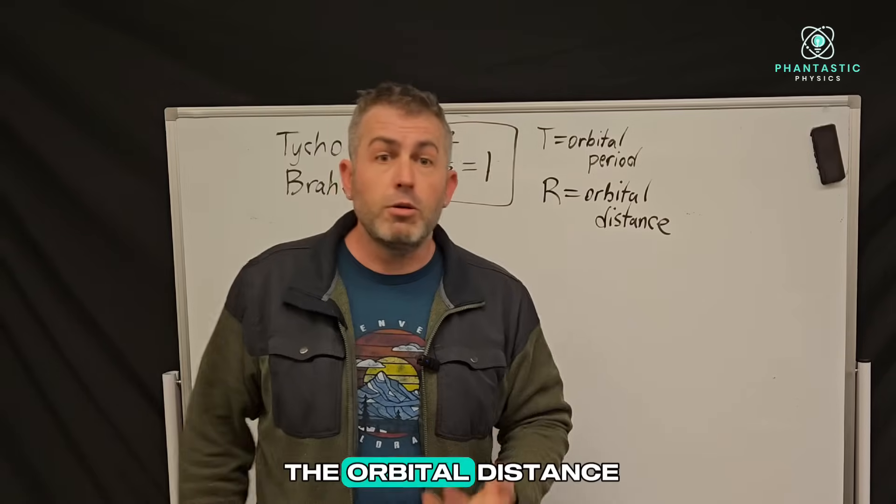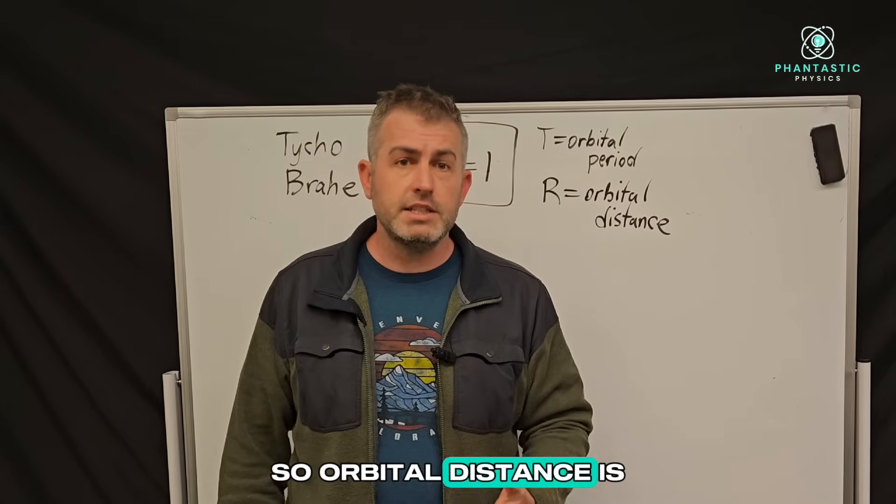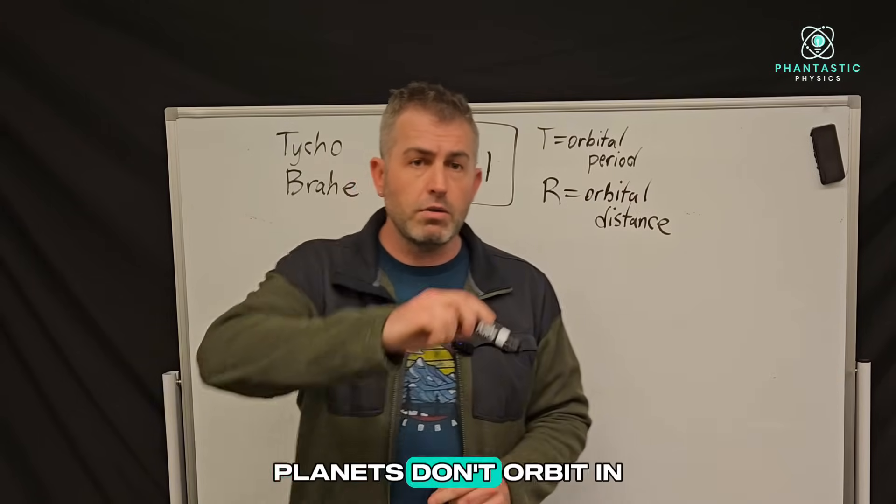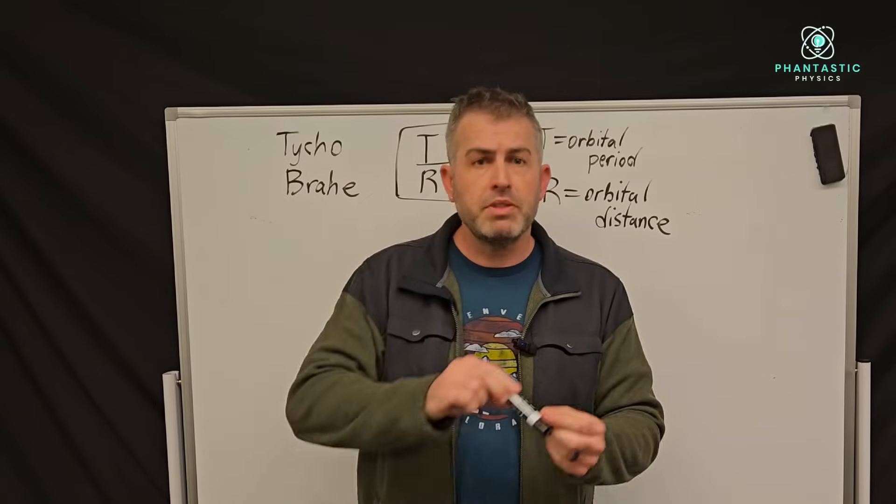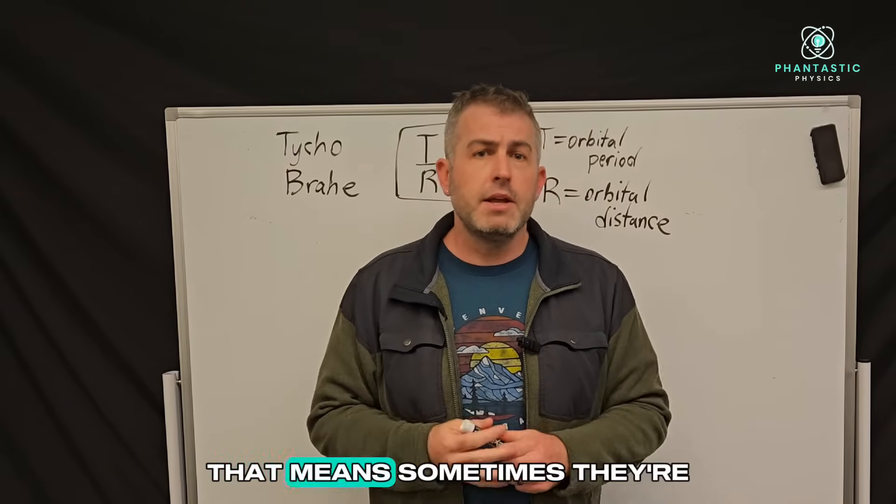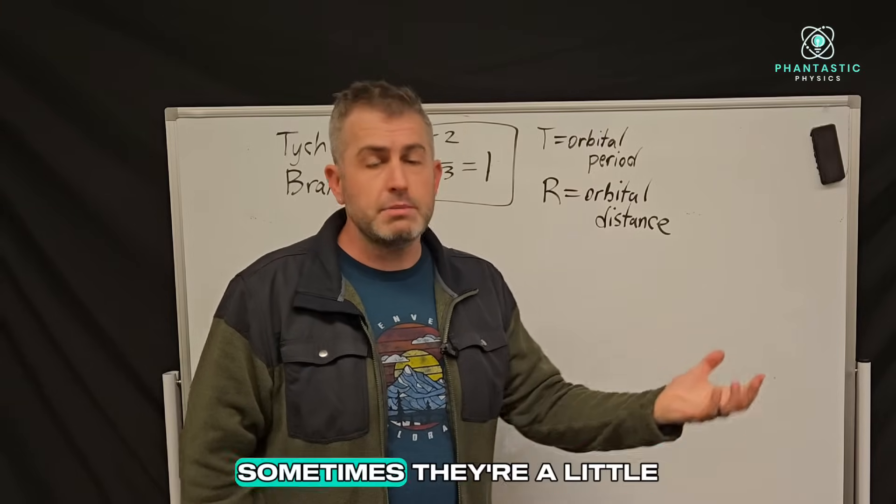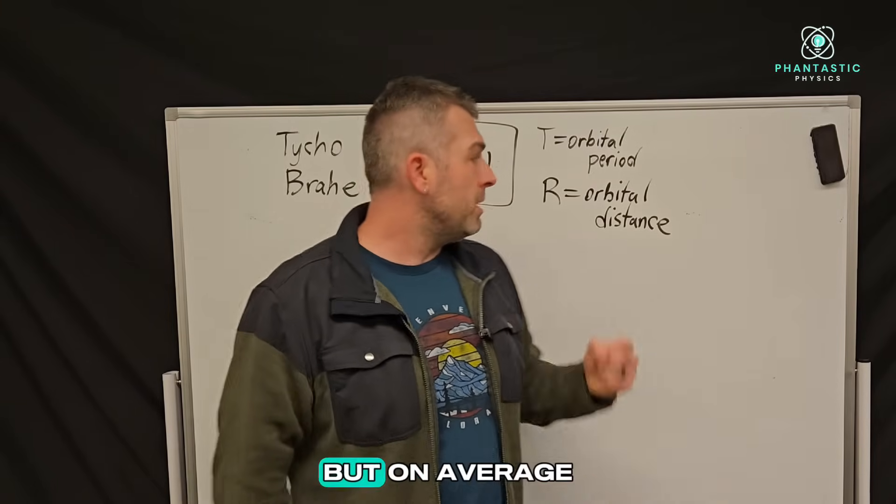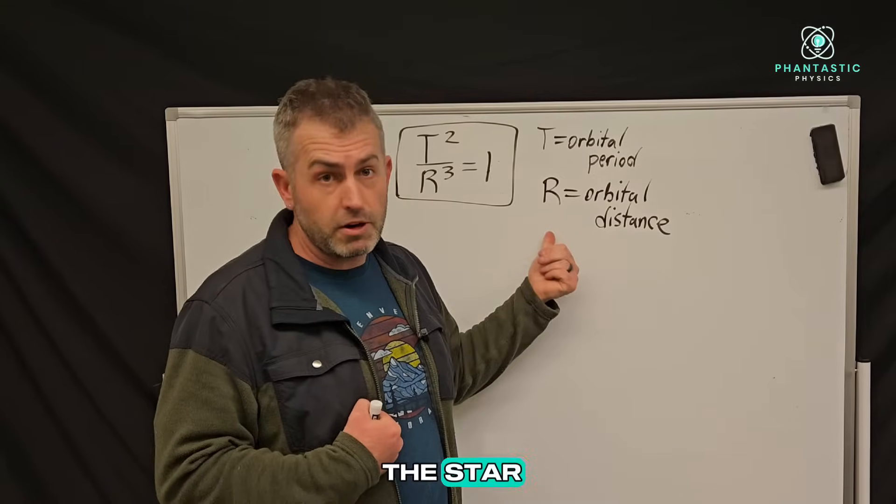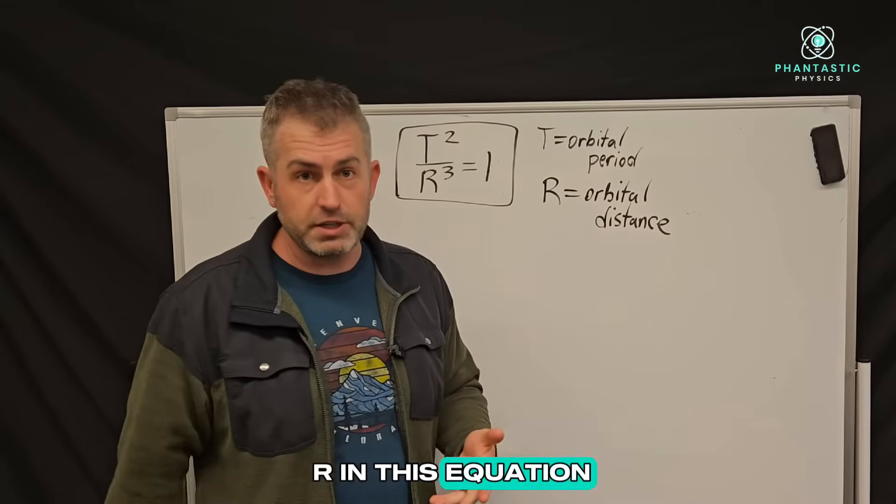R is called the orbital distance. So orbital distance is how far away is that planet from the sun on average. Remember, planets don't orbit in perfect circles. They orbit in ellipses, which are like stretched out orbits. So that means sometimes they're a little further away, sometimes they're a little closer to the sun, but on average, you could say that every planet is a certain orbital distance away from the star. And that is the R in this equation.